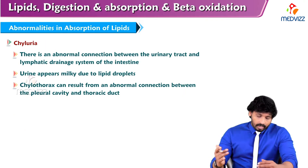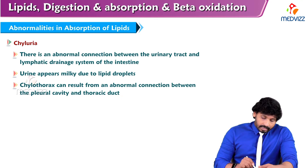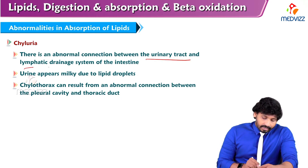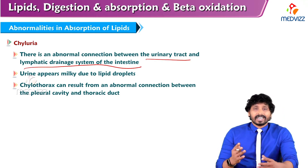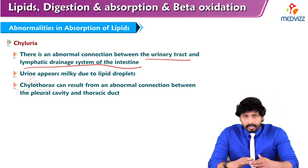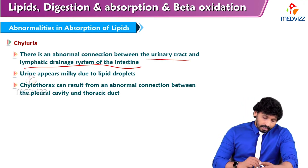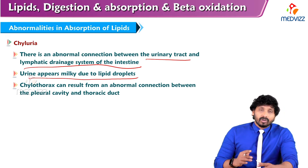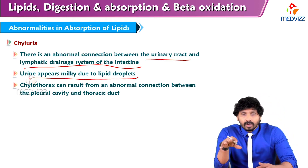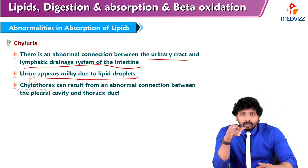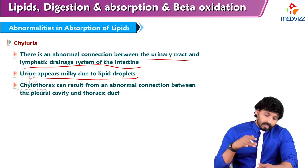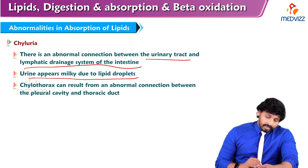Chyluria — what is chyluria? There is an abnormal connection between the urinary tract and the lymphatic drainage system of the intestine, such that urine appears milky due to leakage of chyle into the urinary tract, caused by lipid droplets entering the urine.